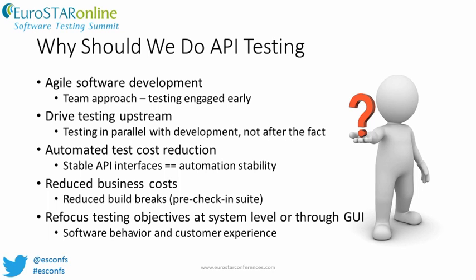Finally, testing the core functionality at the API level where it lives enabled us to change how we design our GUI automation. Automating tests through the GUI can focus more on the software behavior and reduces the number of redundant functional tests through the GUI.